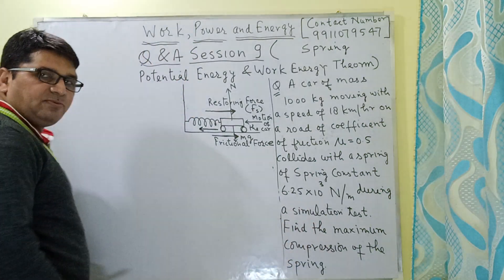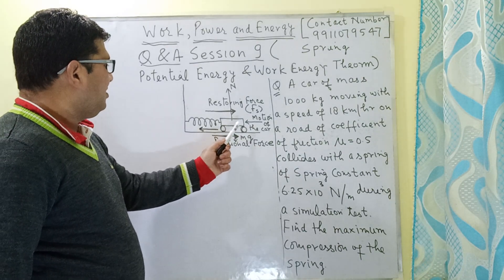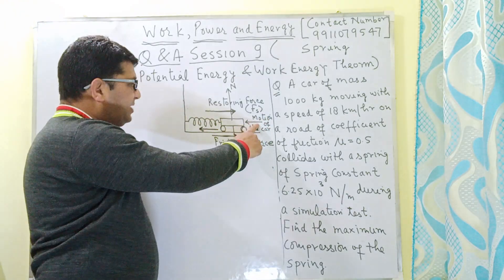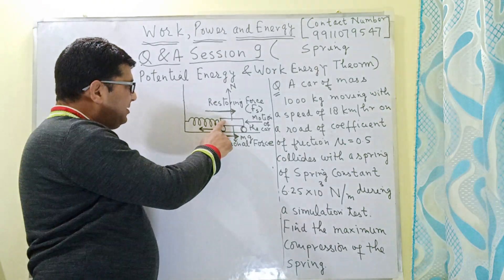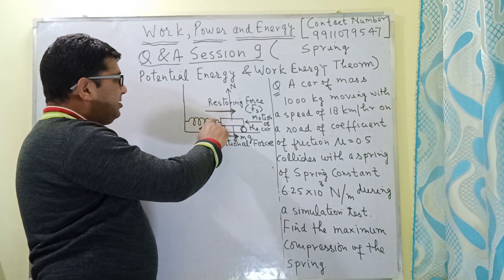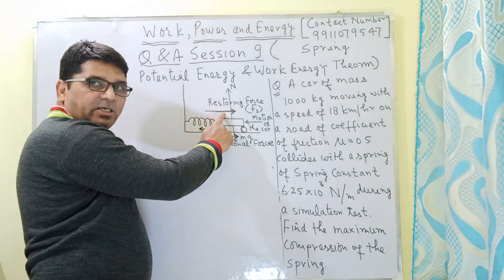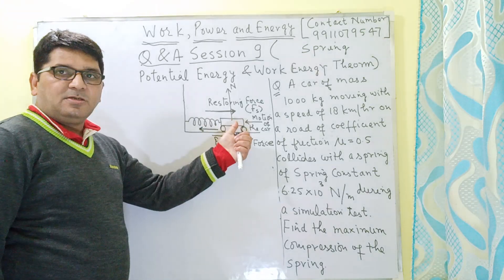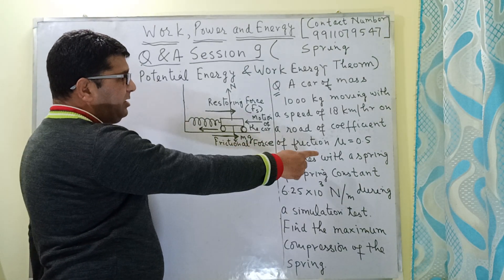In order to save time, I have already drawn a small figure. In this figure, this is the car moving in this direction, as indicated by the arrow. When the car comes in contact with the spring, a restoring spring force will act in the opposite direction — as indicated by this arrow — which is opposite to the direction of motion of the car, or opposite to the direction of compression of the spring.